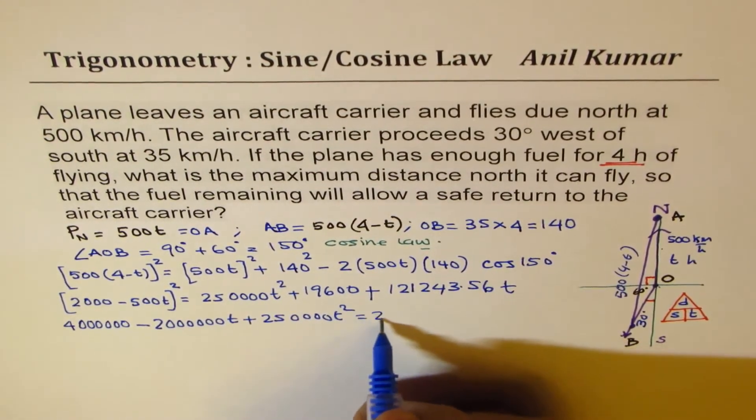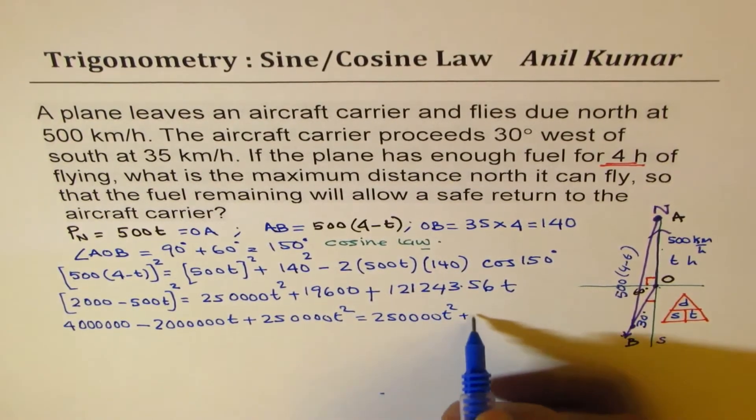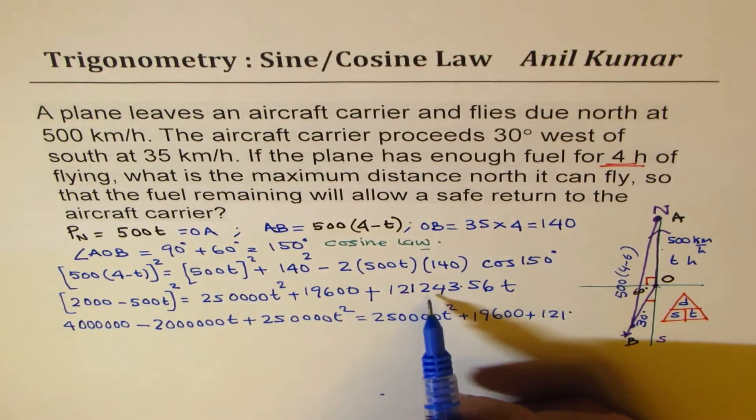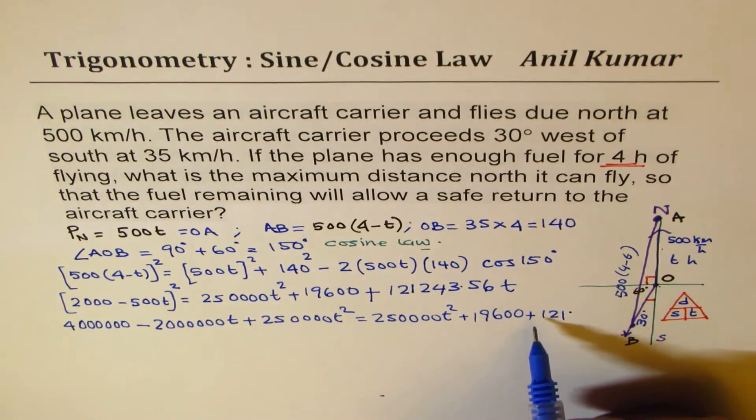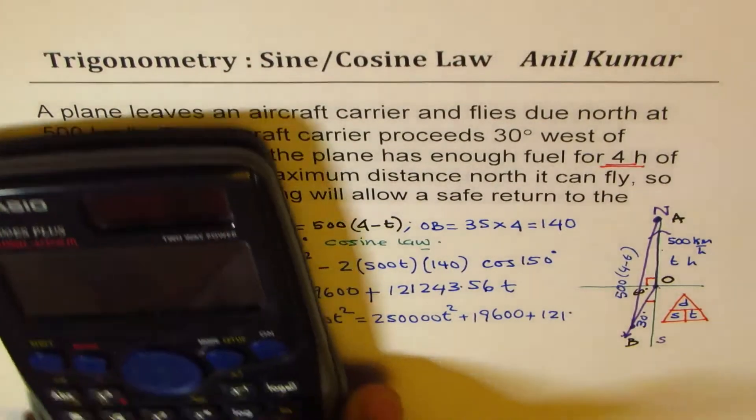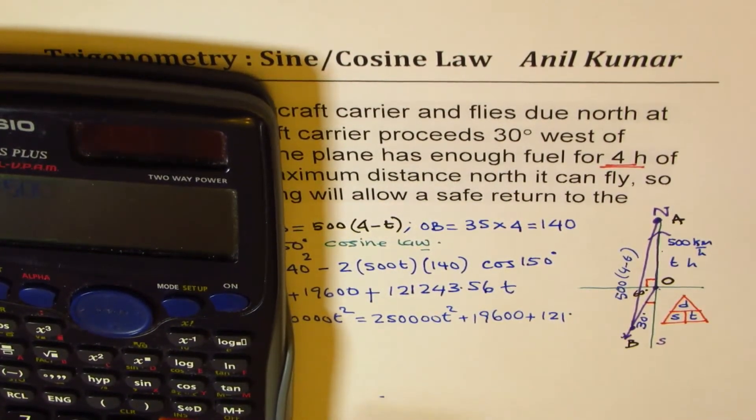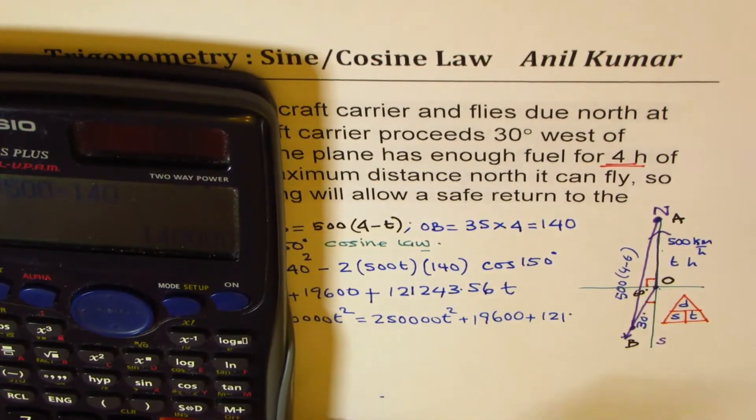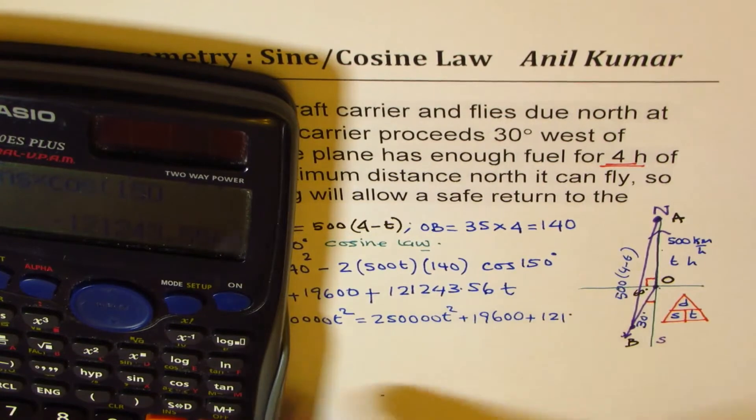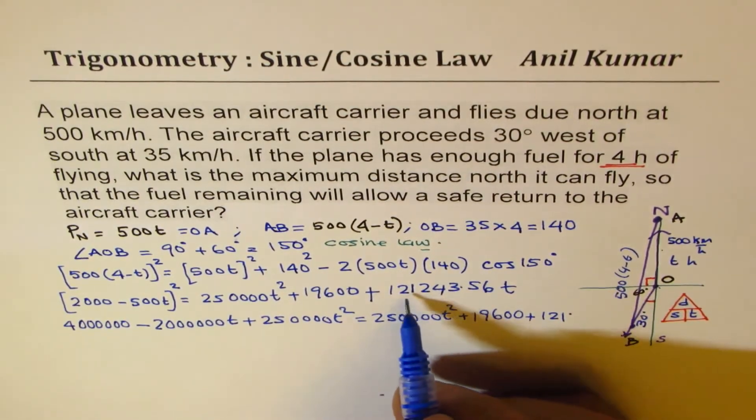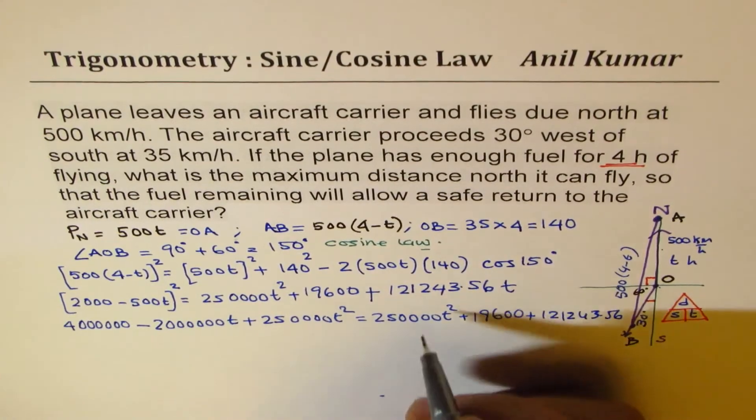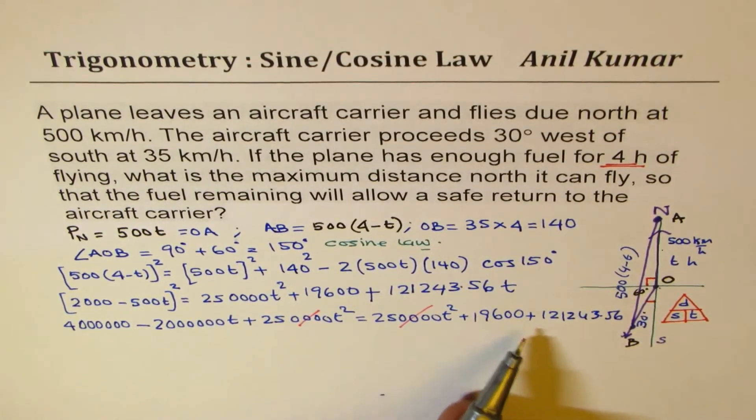And on the right side, which is 250,000 T square, plus 19,600, plus 121,243.56. Let's do this calculation once again. Let me just check this. 2 times 500, let's do 2 times 500 times 140, and then we'll multiply by cos of 150. So it is 121,243.56. So if you see, these two terms cancel out, we are left with terms with T's, and the constants.